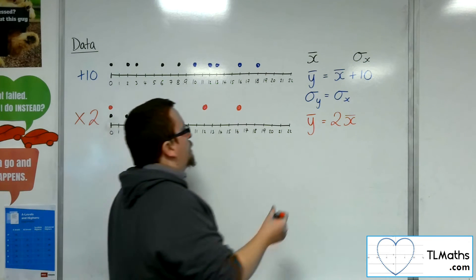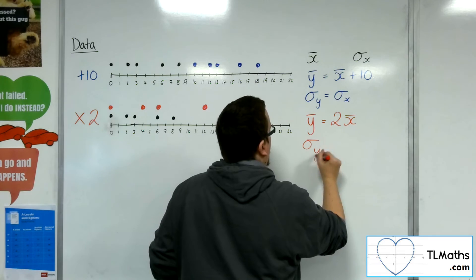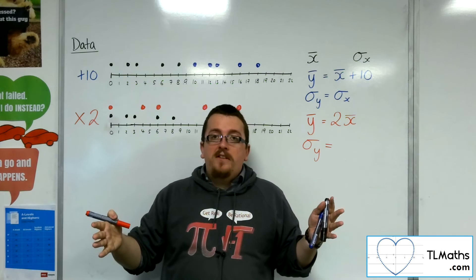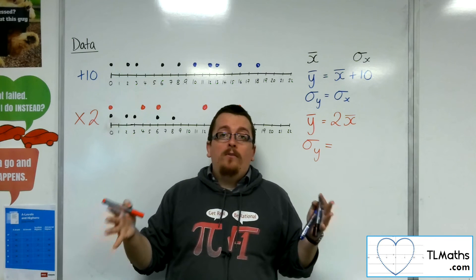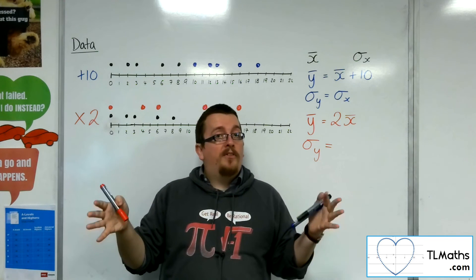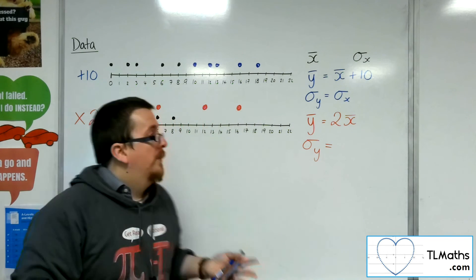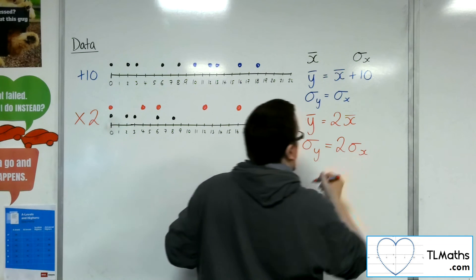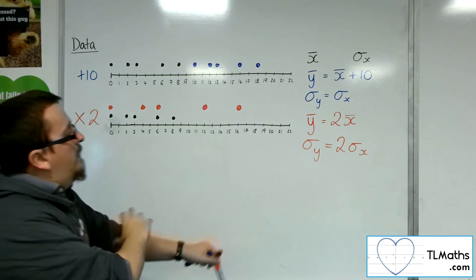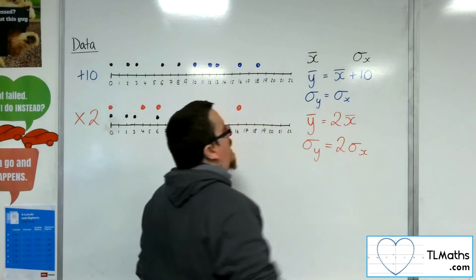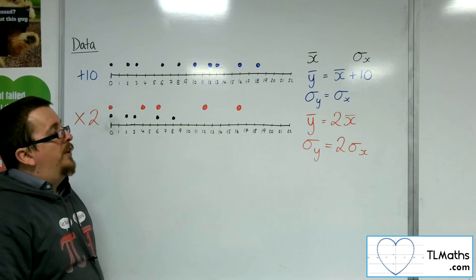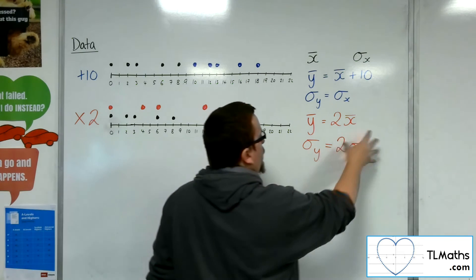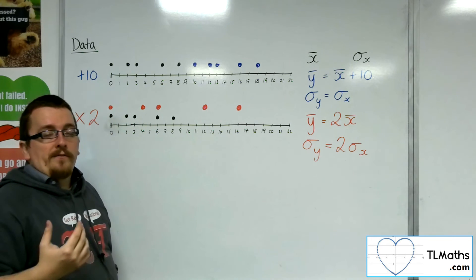How about the standard deviation? Well, in multiplying everything by 2, the distances between each of the data points have all now, well, the average distance between each of the data points of the mean has now doubled. And so the standard deviation has doubled. So what we can see is that if I add or subtract a certain amount to my data points, then the mean will change but the standard deviation won't. If I multiply or divide all of my data points by a certain value, then both the mean and the standard deviation change.